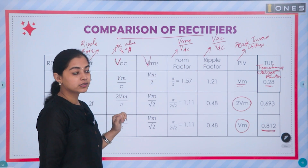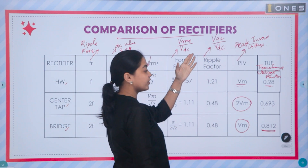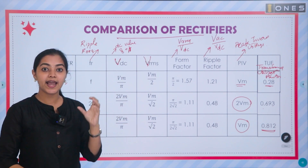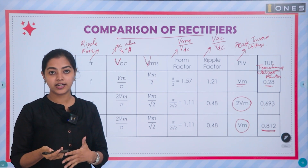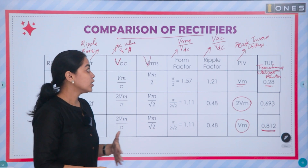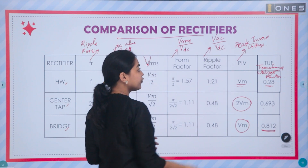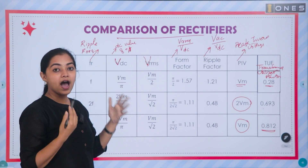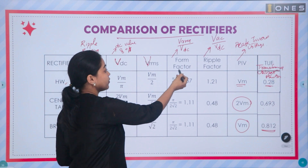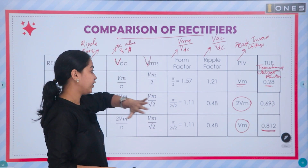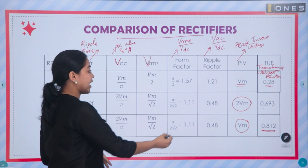What does ripple factor mean? We call it VAC by VDC. VAC means we have AC content in the output — the AC content is actually the ripples. So, ripple factor is ripples divided by VDC. VDC is actually the average value of the output, which we call the DC value. Form factor is VRMS by VDC — the RMS value divided by the DC value.